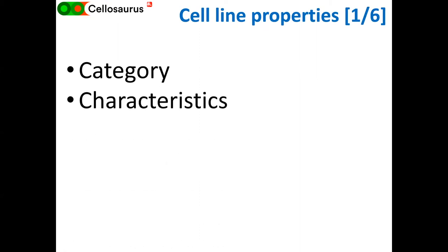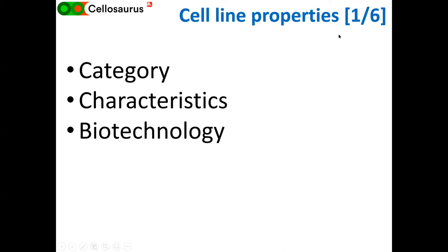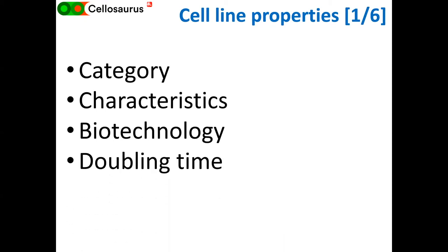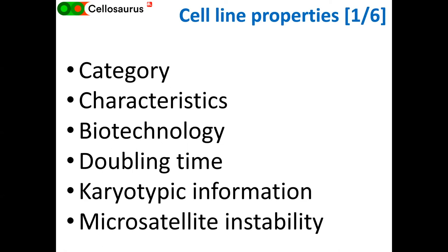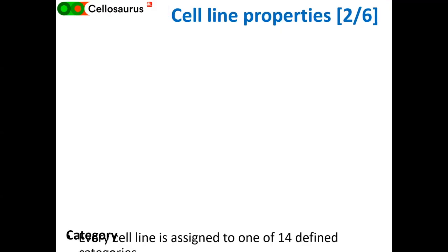After the pause, we'll see how to search for STR profiles using a tool called CLAST. Then let's change subject and go through different information properties of cell lines you can find in Cellosaurus — about six categories, which I'll describe now.